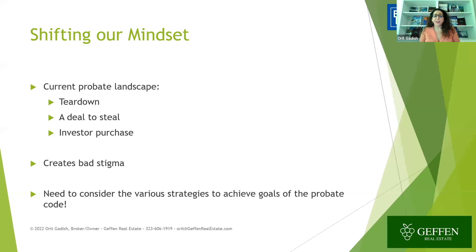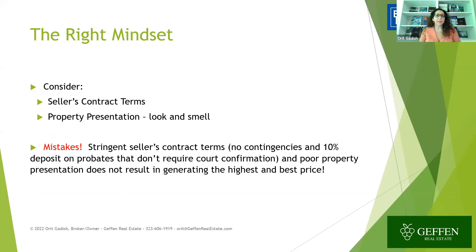We need to consider the various strategies to achieve the goals of the probate code — how do we get the highest and best price? We need the right mindset. Consider what are the seller's contract terms, and what is the property presentation — what does it look like, what does it smell like? A big mistake is stringent seller's contract terms: no contingencies and 10% deposit on probates that don't require court confirmation. If it's not required, let's not push that on buyers and scare them off. Poor property presentation doesn't result in generating the highest and best price.